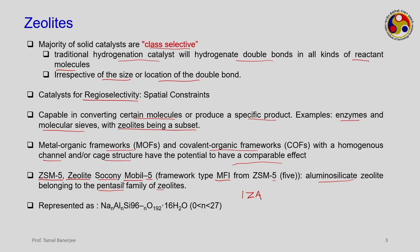Pentasil means two tetrahedral groups coming in contact with each other. The overall molecular formula of ZSM-5 is NaN·AlN·Si(96-N)·O192·16H2O, where N lies between 0 and 27. To define zeolites in one sentence: zeolites are a group of crystalline microporous materials constructed from regular networks of alumina and silica tetrahedra (TO4), where oxygen atoms bridge the tetrahedral atoms. T can be silicon or aluminum — these oxide networks are technically known as tectoaluminosilicates.